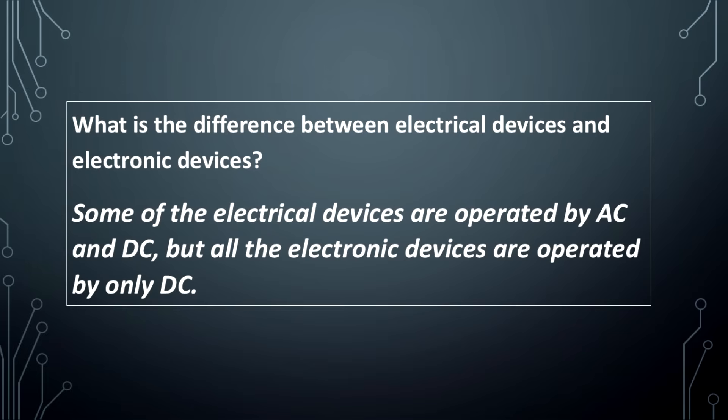What is the difference between electrical devices and electronic devices? Some of the electrical devices are operated by AC and DC, but all the electronic devices are operated by only DC.